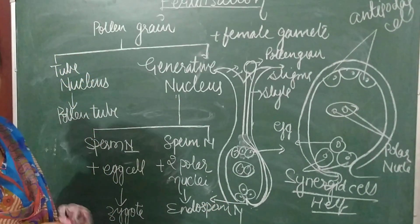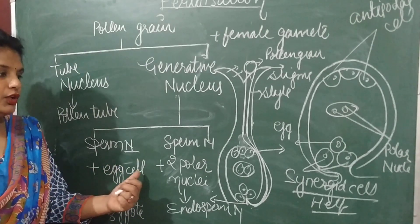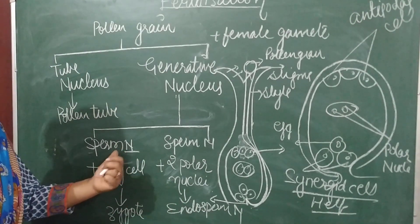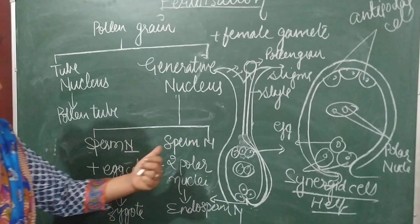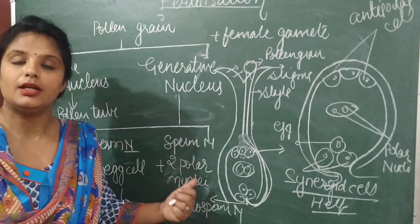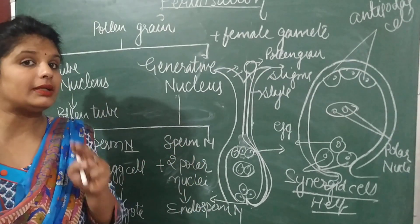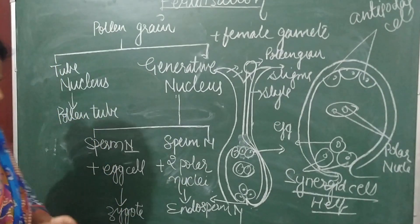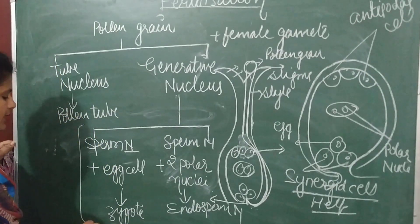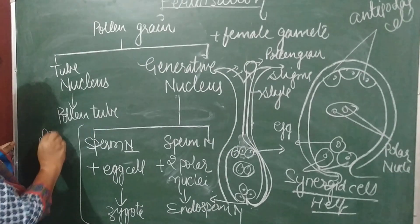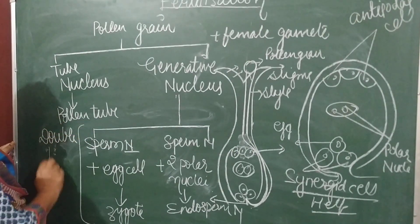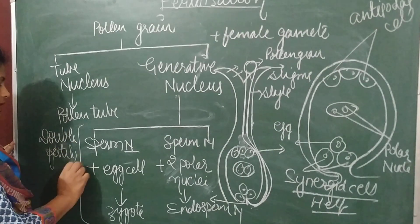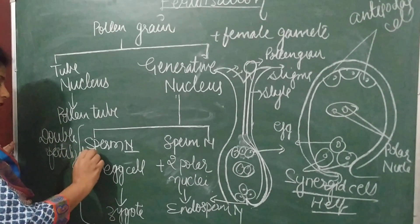There are two fertilizations: one fertilization between a sperm nucleus and the egg cell to form a zygote, and another fertilization between a sperm nucleus and the two polar nuclei to form the endosperm nucleus. Because fertilization takes place twice, this process is known as double fertilization — which is a very important concept.